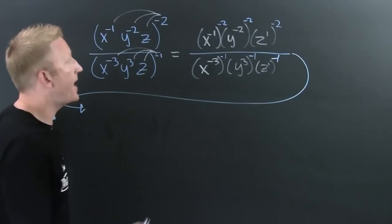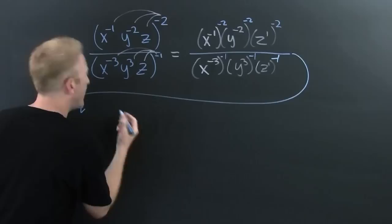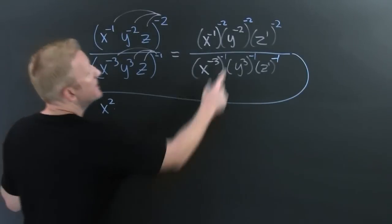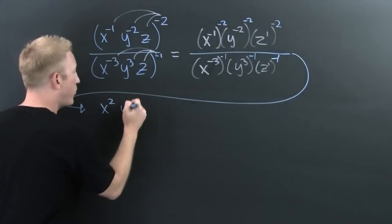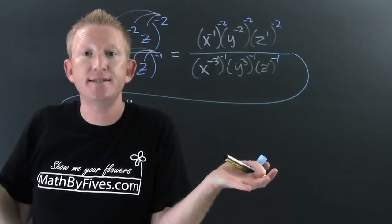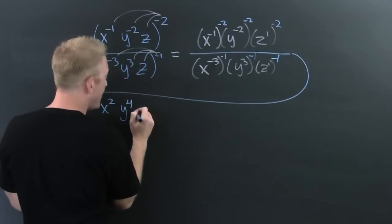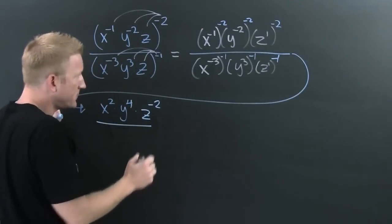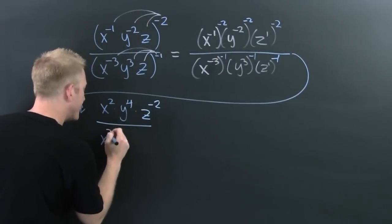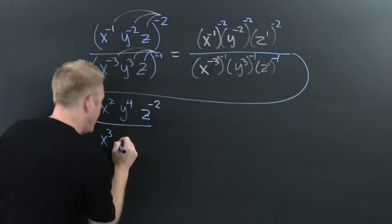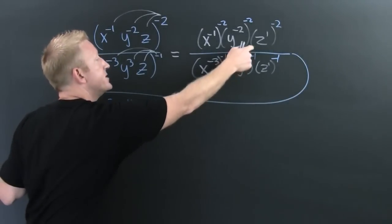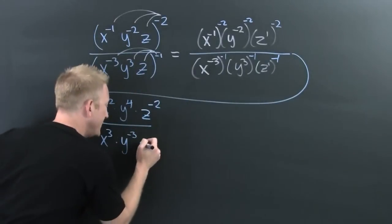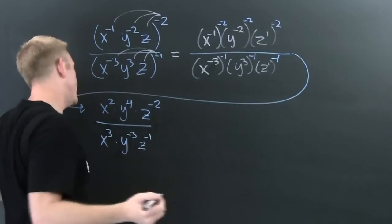I'm gonna take it right back over here. Power raised to a power, you multiply. So this is x to the 2, because minus one times minus two is 2. Then move on to y: y to the minus two, to the minus two — that's y to the 4, because minus two times minus two is 4. And z to the one, to the minus two — that's z to the minus two. I got x to the minus three, to the minus one — that's x to the 3. Then y to the — power raised to a power, you multiply — that's minus 3. And z: one times minus one is minus one.